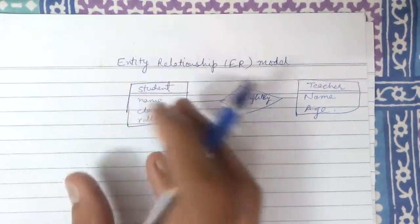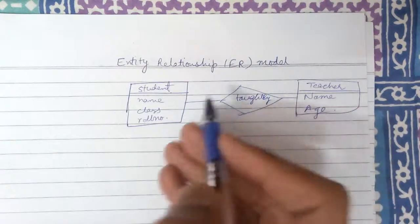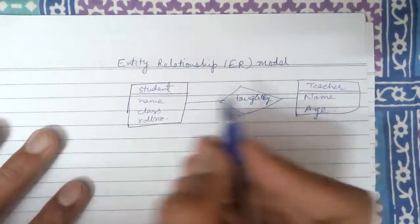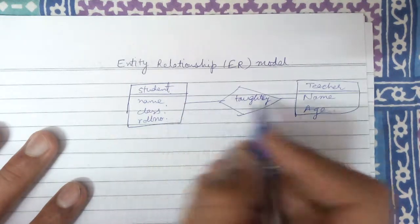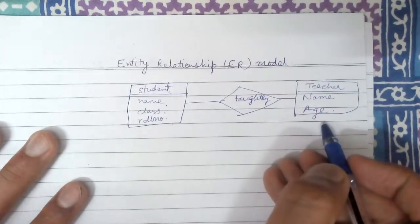Student and teacher are two different entities in this case and these are its attributes. Name, class and roll number are attributes of a student. Name and age are attributes of a teacher.